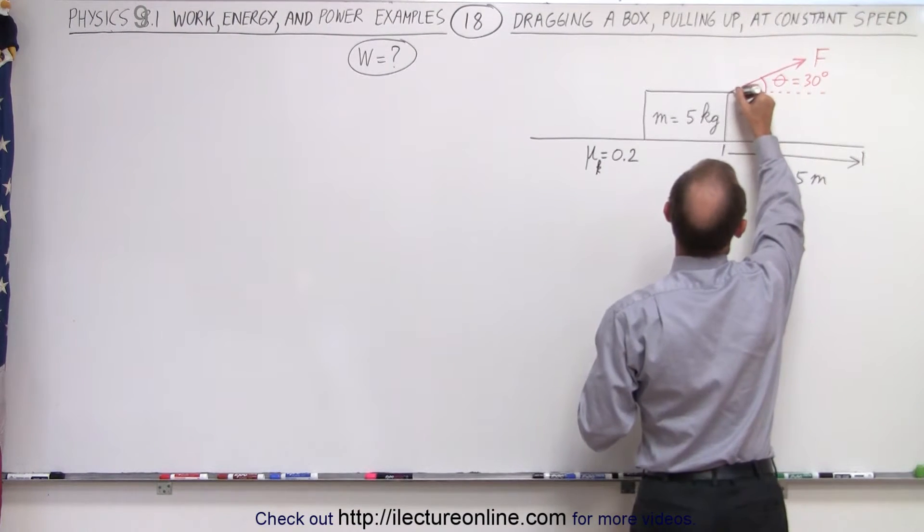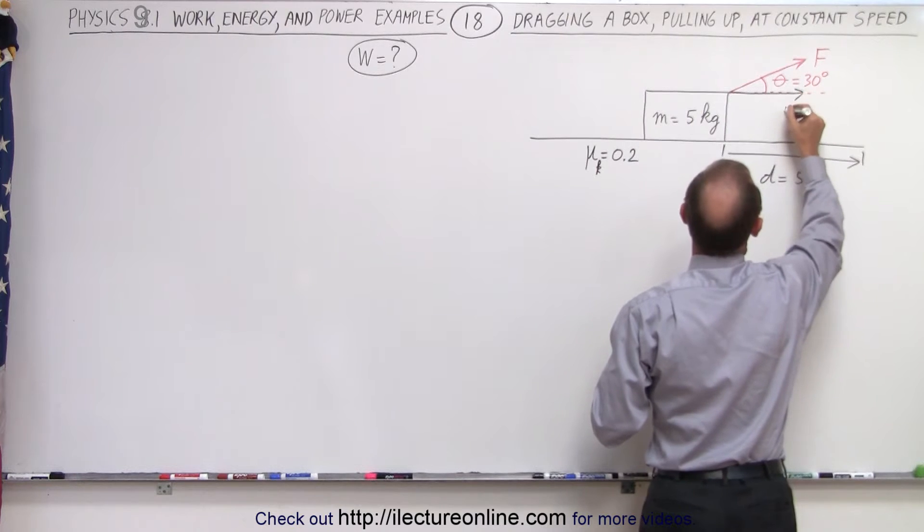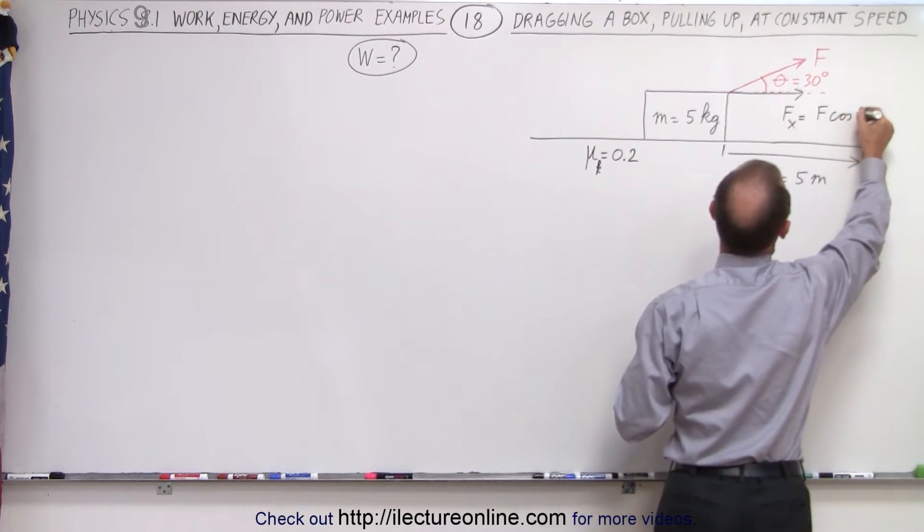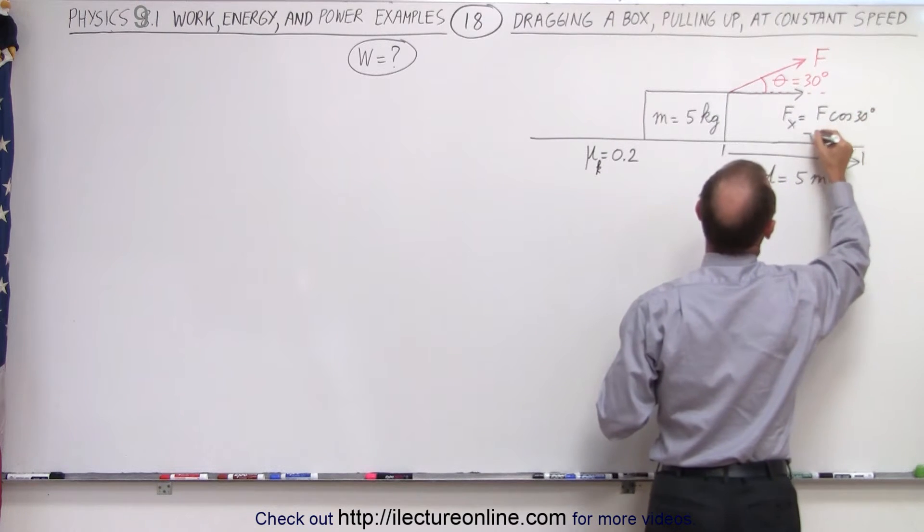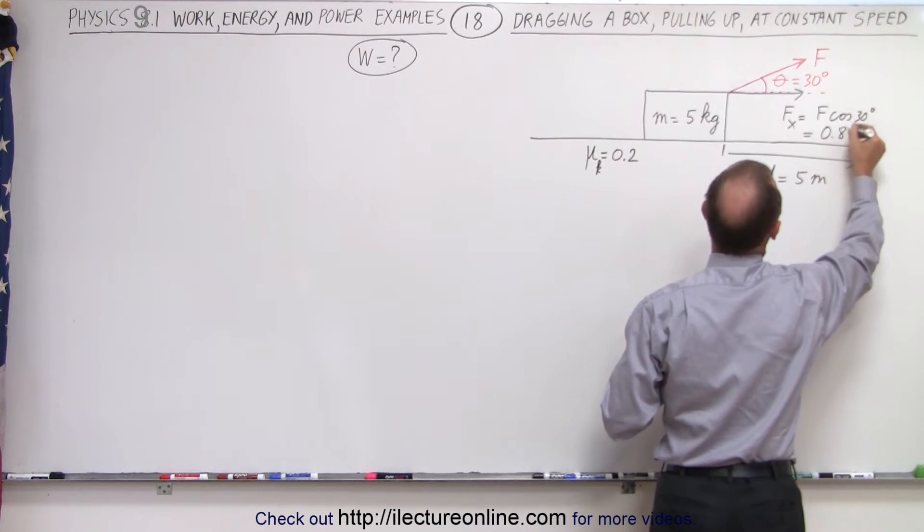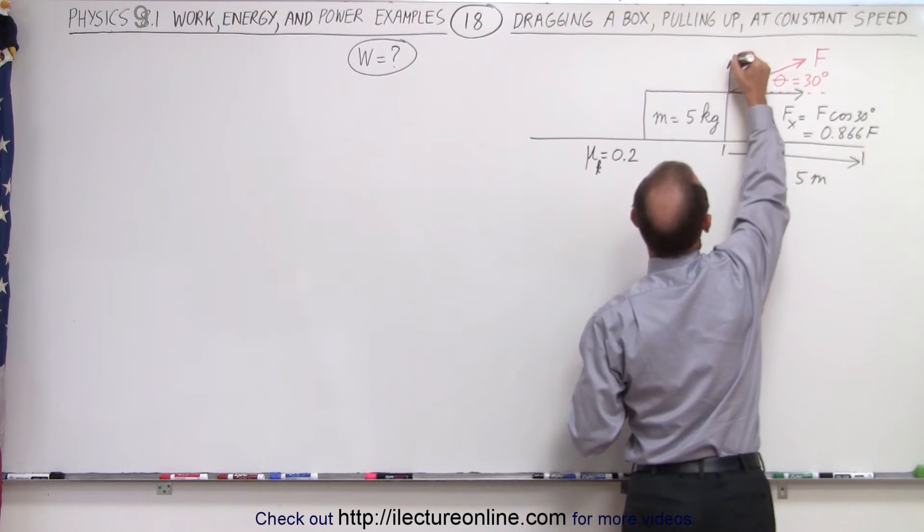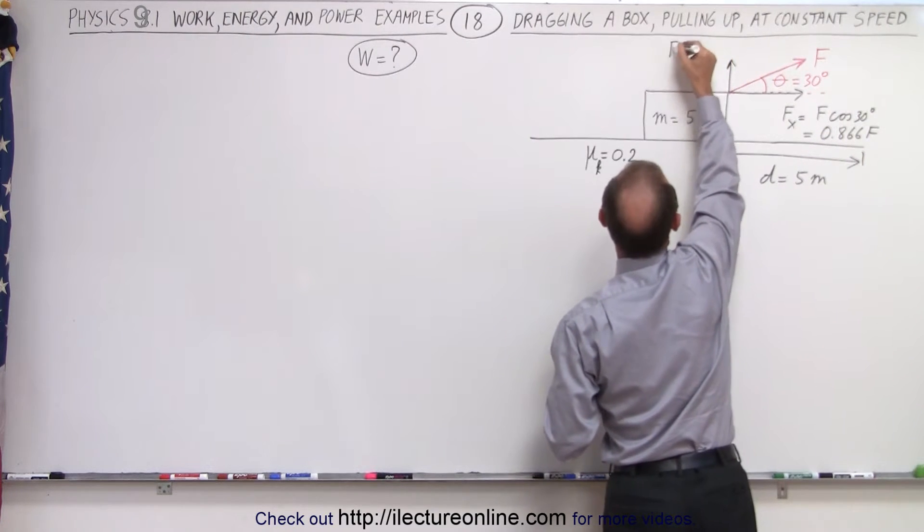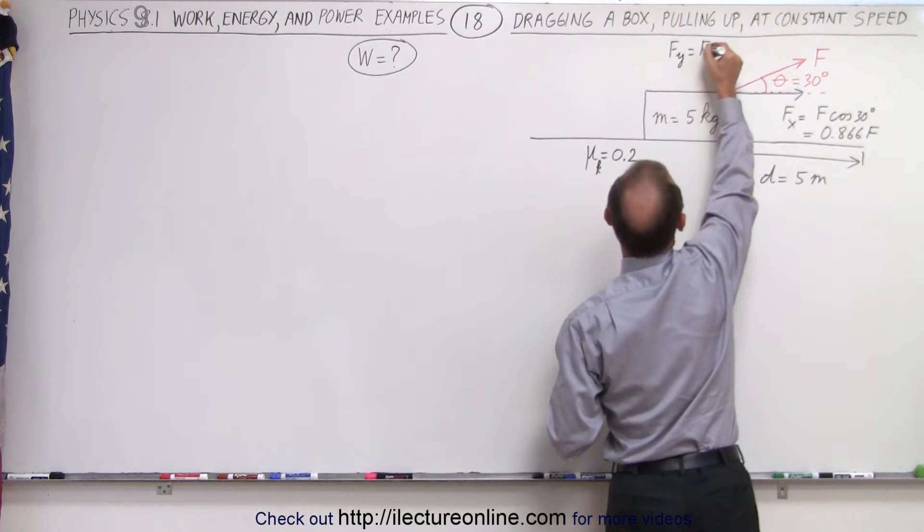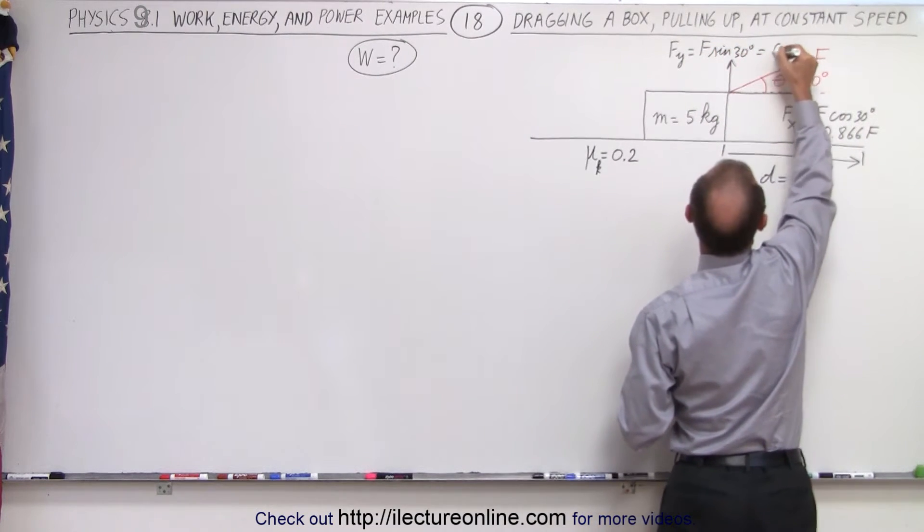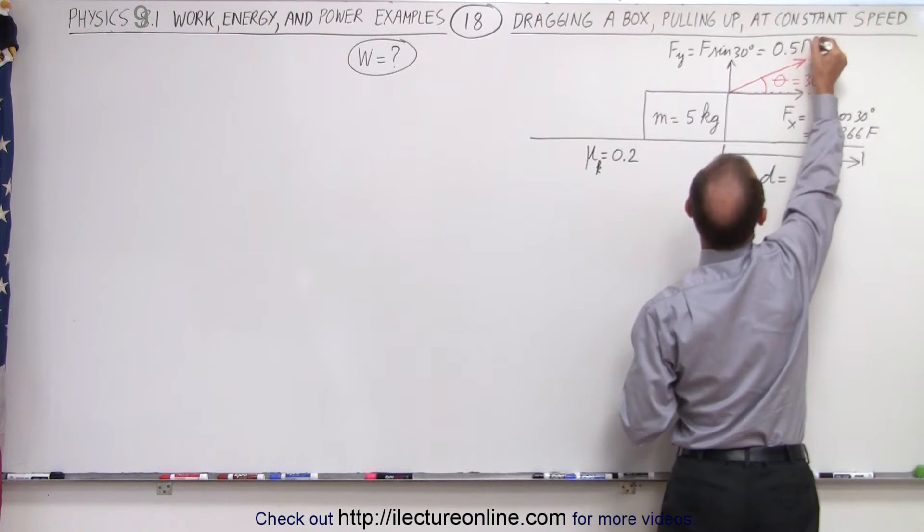So here we have the x component: f_x is equal to f times the cosine of 30 degrees, which would be equal to 0.866f. And then we have the y component: f_y is equal to f times the sine of 30 degrees, which means it's 0.5f.